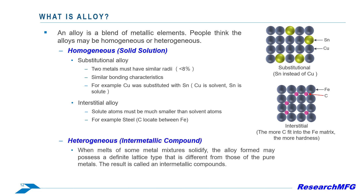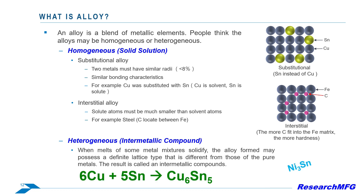Moving to heterogeneous alloys: when molten mixtures of metals solidify, the alloy can develop a unique lattice type distinct from pure metals. This outcome is known as intermetallic compounds, or IMC. IMC differs from solid solutions due to distinct crystal structures resulting from chemical reactions, and IMC's crystal structure is wholly different from that of metals.